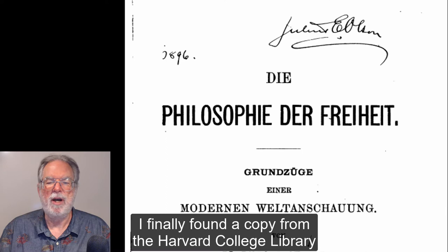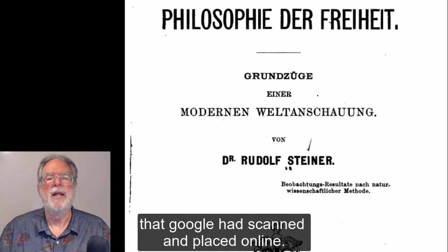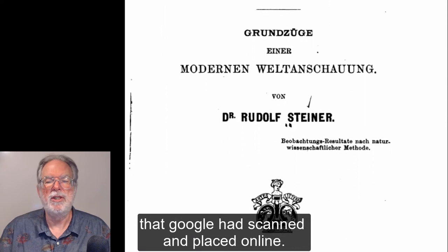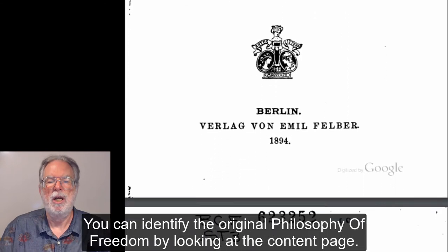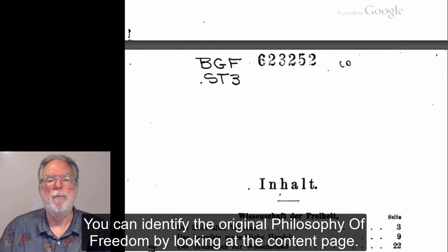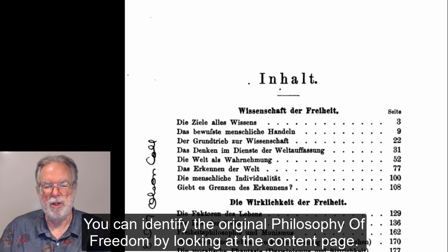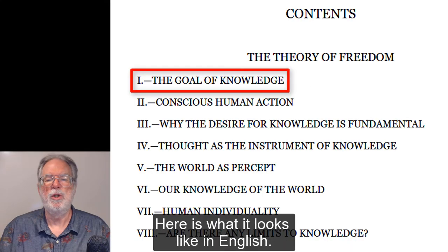I finally found a copy from the Harvard College Library that Google had scanned and placed online. You can identify the original Philosophy of Freedom by looking at the content page. The content page will show an additional chapter called The Goal of Knowledge. Here is what it looks like in English.